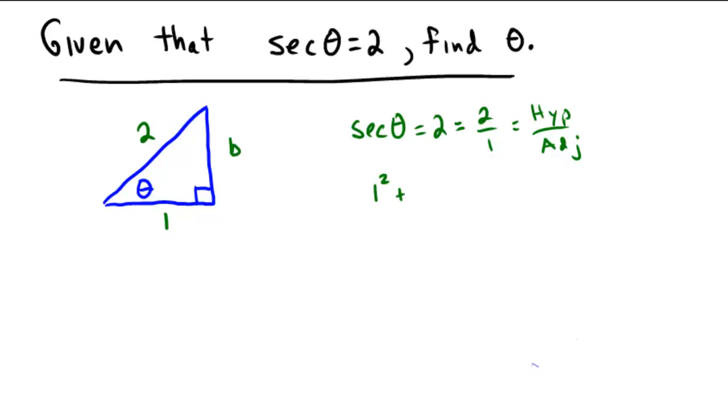1 squared plus b squared equals 2 squared. So 1 plus b squared equals 4, and subtracting 1 from both sides gives us b squared equals 3. Therefore, b must be the square root of 3.